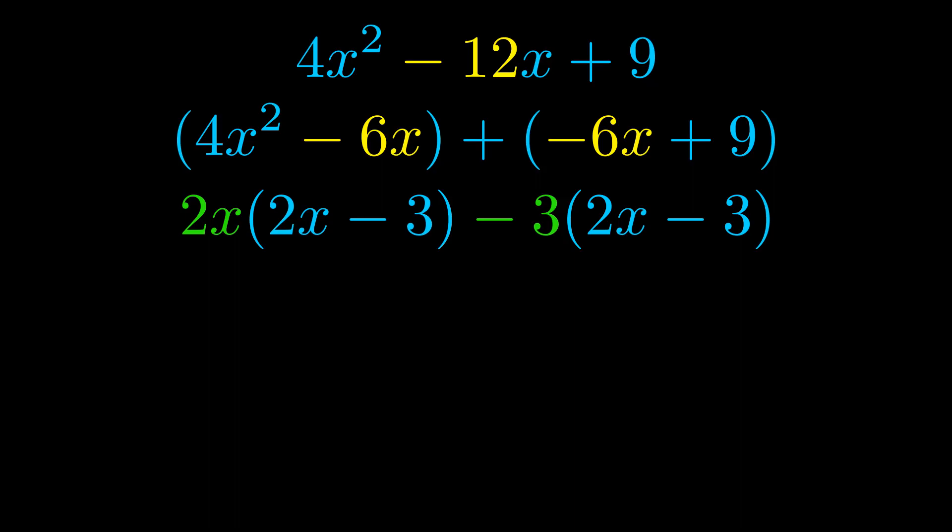Notice also how what remains inside of the parentheses is the same in both cases. The blue values are the same. Those blue values will become one of our factors and we will combine the two green values, the GCFs that we pulled out, to get the other one. And that is our fully factored equation.